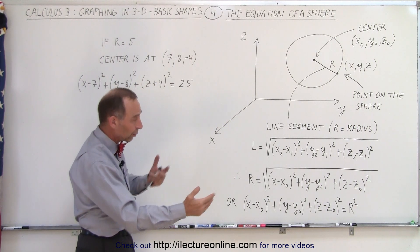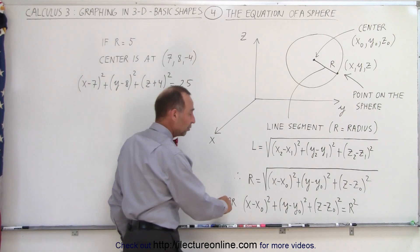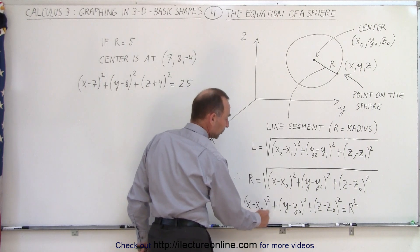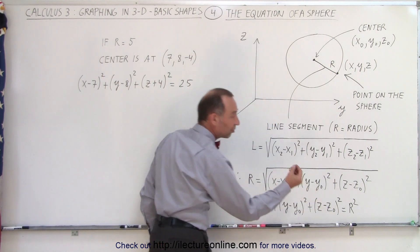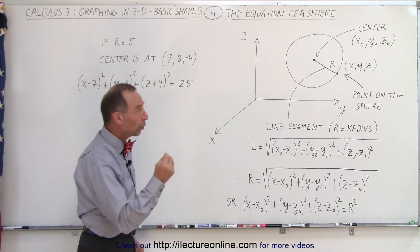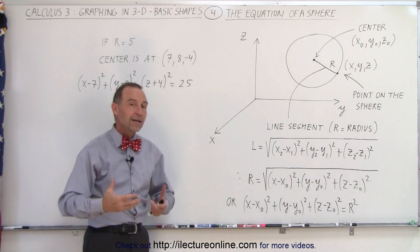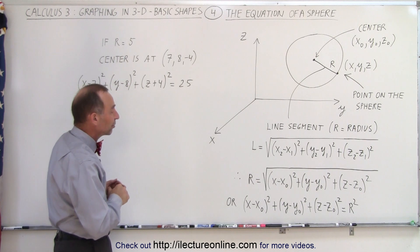Then if we square both sides and rearrange the terms a little bit, this will become the equation of a sphere in three-dimensional space, where x sub-naught, y sub-naught, z sub-naught are simply the x, y, and z coordinates of the center of the sphere, and x, y, and z are the directions in three-dimensional space.